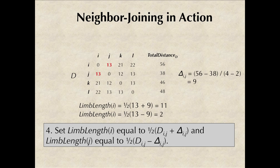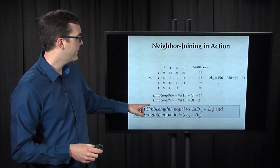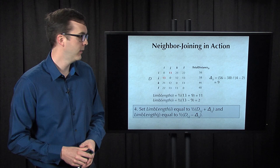You may remember before that we had a formula for the limb length of I. The formula that neighbor-joining uses is going to give the same result when the underlying distance matrix D is additive. But this formula offers better results when we deal with non-additive distance matrices. Here, limb length of I equals one-half of the original distance matrix value D plus delta_IJ, and limb length of J equals one-half D minus delta_IJ.